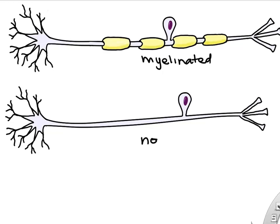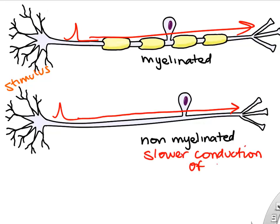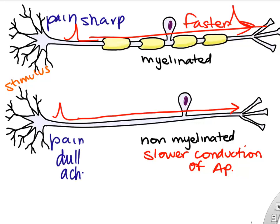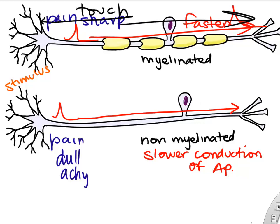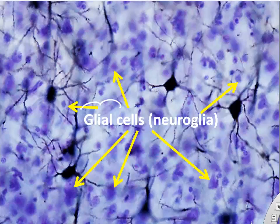Some sensory neurons are myelinated while others are not, and this affects how fast the action potential travels down the axon. You may notice this when you stub your toe — you might feel the physical touch before you feel the pain in your brain, because different signals reach the brain at different speeds.